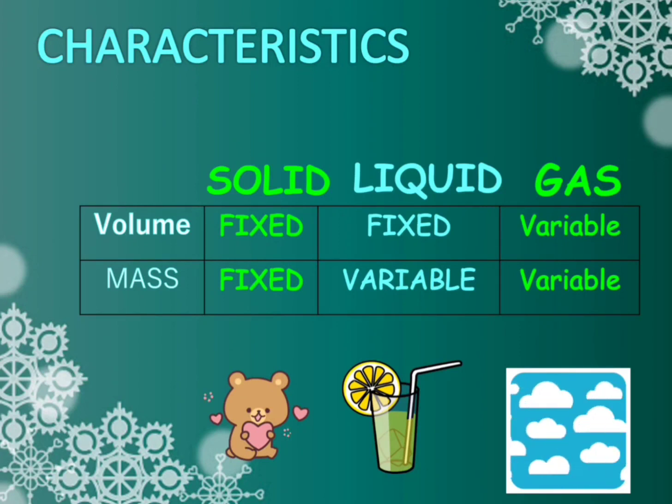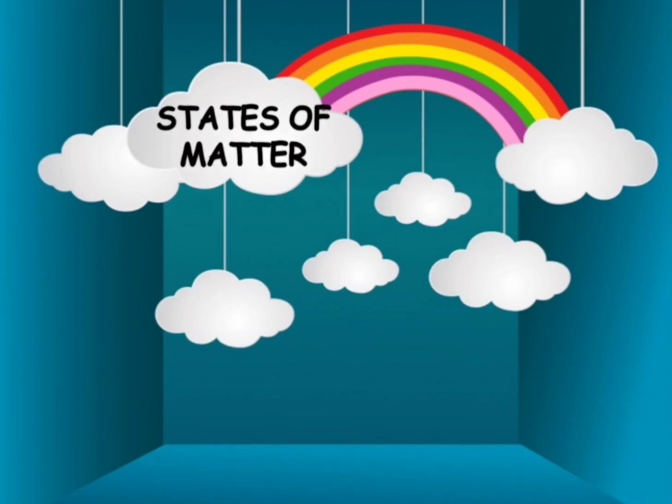Let's recap what we have learned so far. States of matter. They are of three forms. Can you guess them? Yes, first one is solid. That is an ice cube. Second is liquid and gas.